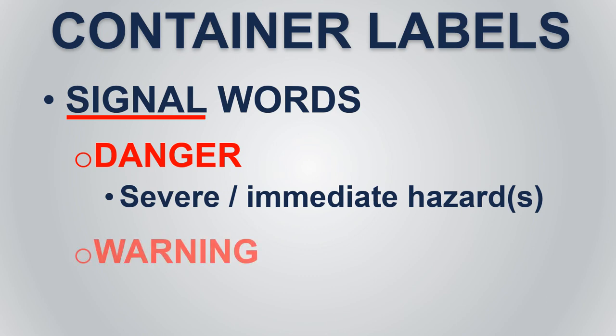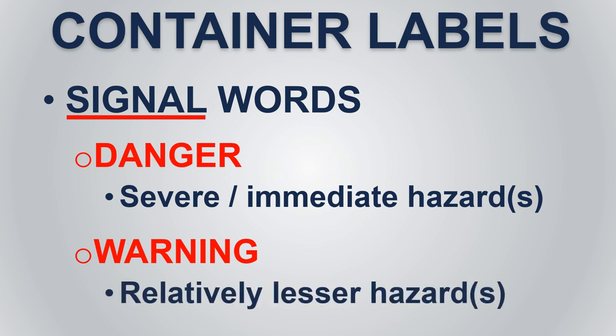The signal word warning indicates a less severe but still potentially harmful level of hazard. For example, a chemical that could cause skin or eye irritation upon contact would be marked with the signal word warning, as would something that would cause stomach irritation if someone were to ingest the product.